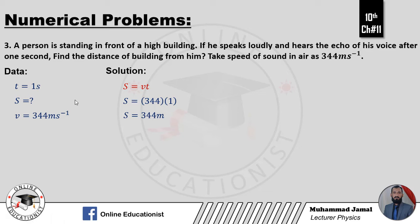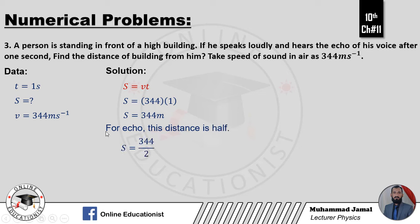Yhe 344 meter woh total distance hai jo sound ne cover ki — person ke point se building tak jaake wapas aaya. Sound ne double distance cover ki. Jabke hume person se building tak ki distance find karni hai. To is distance ko 2 se divide karenge: distance equal to 344 divided by 2 — person se building tak ka distance aayega 172 meter.